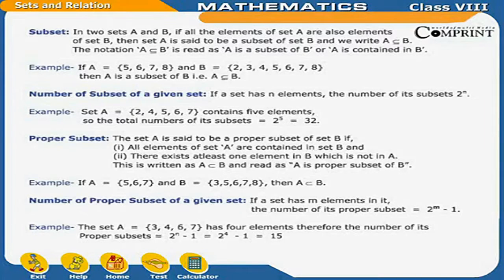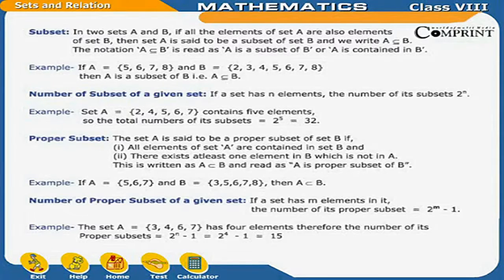Number of proper subsets of a given set: if a set has m elements, the number of its proper subsets is 2^m − 1. For example, set A = {3, 4, 6, 7} has 4 elements, so the number of its proper subsets is 2⁴ − 1 = 15.